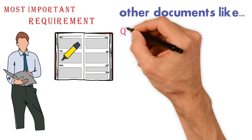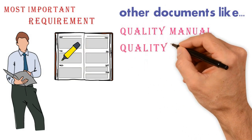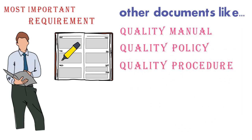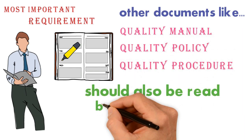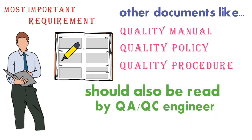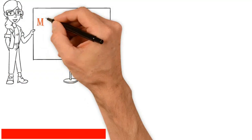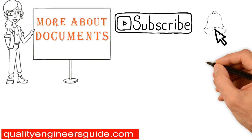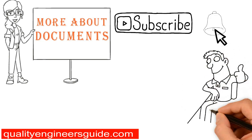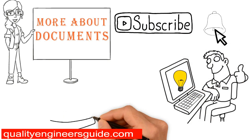Other documents such as quality manual, quality policy, quality procedures, etc. These are the company documents that a QA or QC engineer must also read. We will discuss more about documents, so please subscribe to this channel and click the bell icon to get notified every time we publish a new video.